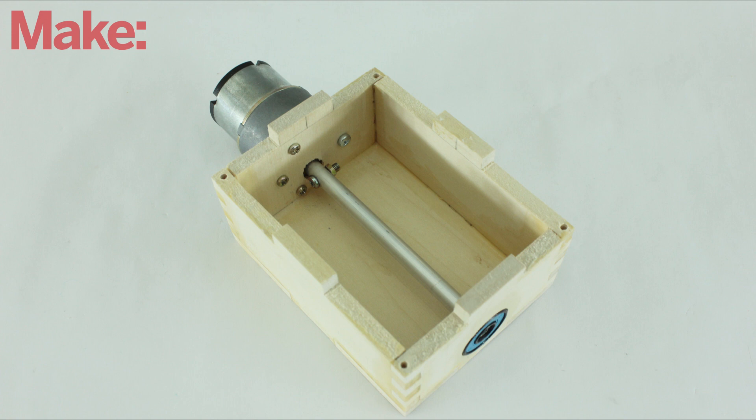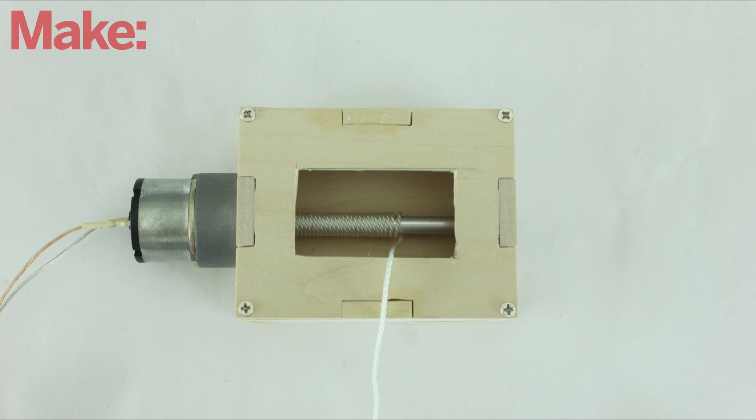Now you can attach the motor to the box with its mounting screws. The last thing that you need to do to the winch housing is to cut a small hole in the center for the rope.